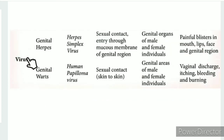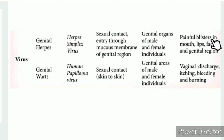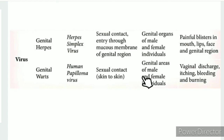Viral STDs: Genital herpes is caused by Herpes simplex virus, transmitted through sexual contact via the mucous membrane of the genital region, affecting genital organs of male and female individuals, with symptoms of painful blisters in mouth, lips, face, and genital region. Genital warts are caused by Human papilloma virus, transmitted through sexual contact skin-to-skin, affecting genital areas, with symptoms of vaginal discharge, itching, bleeding, and burning.